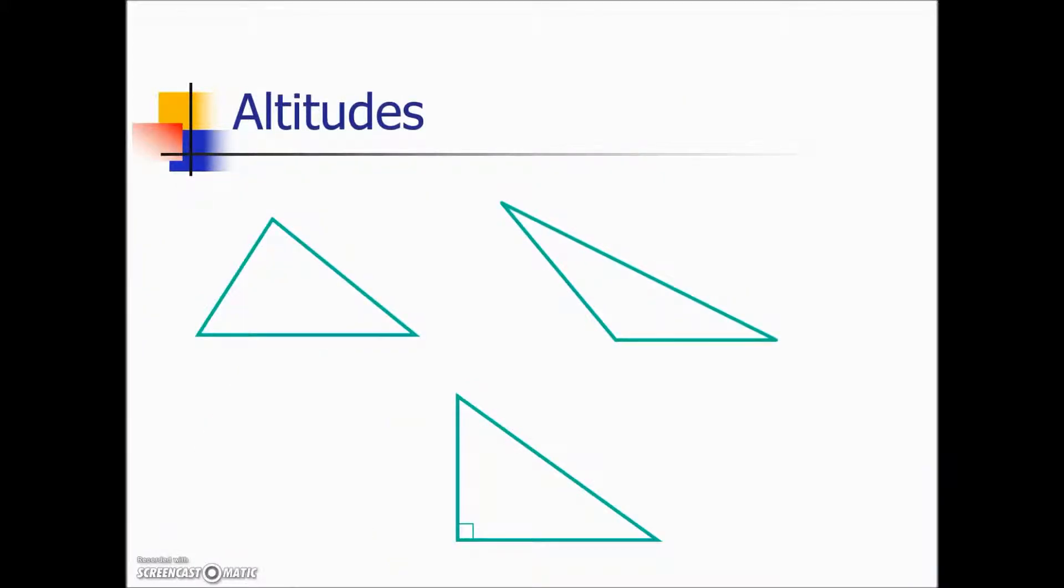Next we want to take a look at defining what an altitude is. It is a straight line drawn from a vertex in a triangle to the side opposite. The line is drawn so that it meets the side opposite at a right angle.